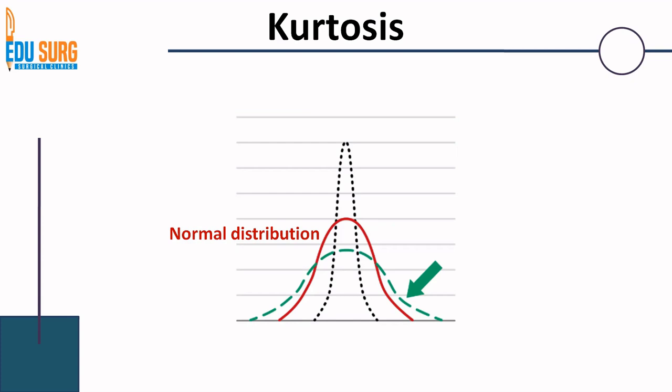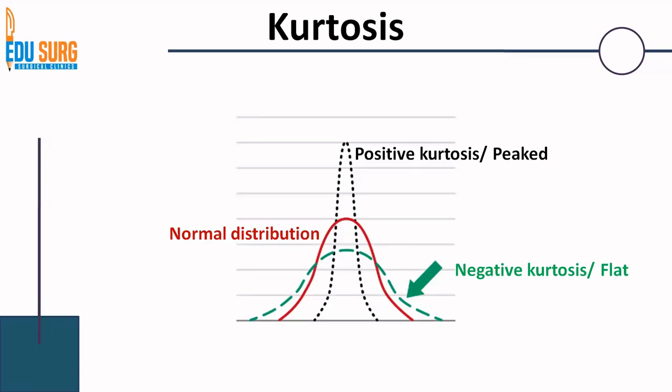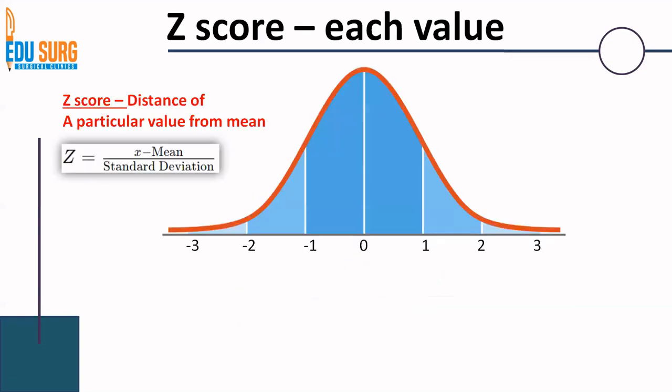Coming to a term known as kurtosis — again a parameter of data distribution. If you have a normal distribution, it has normal kurtosis. If the kurtosis value is negative, the data is flat. If it is positive, the data is peaked. Calculation is beyond the scope of this series and it is not asked in exams. But understand that in a normal distribution kurtosis is normal; if negative, the data is flat; if positive, the data has a peaked distribution.